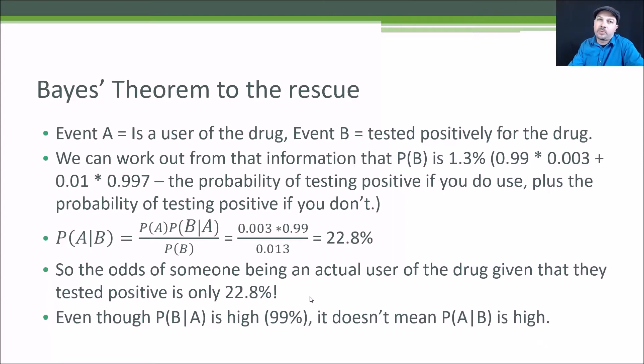If you're going into the medical profession or working with big data, please remember this. Bayes' theorem reminds us that the probability of something given something else is not the same thing as the other way around, and it actually depends a lot on the base probabilities of both things you're measuring. The probability of a drug test being accurate depends a lot on the overall probability of being a drug user in the population, not just the accuracy of the test. Bayes' theorem gives you the tools to quantify that effect.